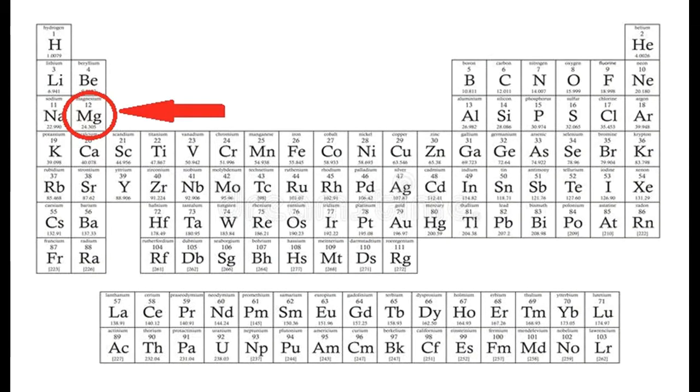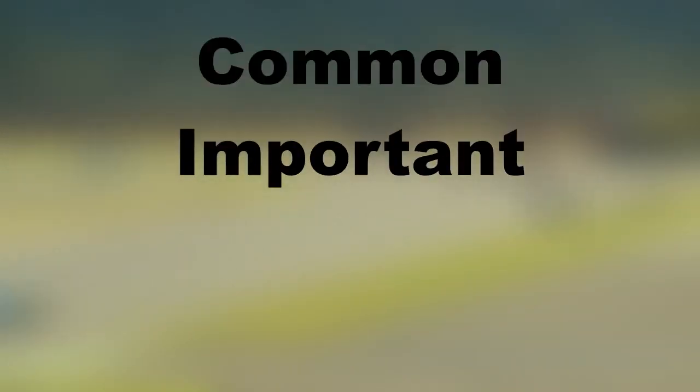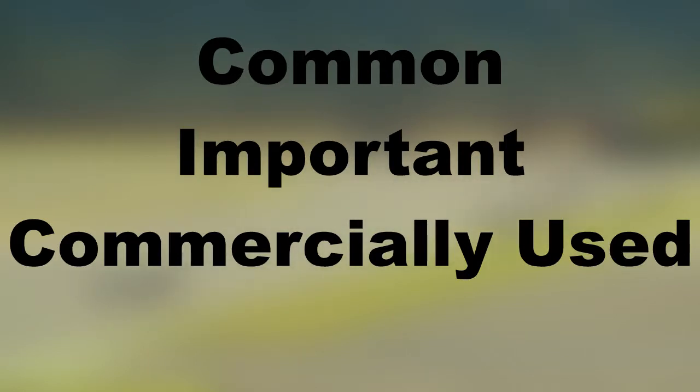Magnesium is the twelfth element on the periodic table with the symbol MG and belongs to the alkaline earth metals group. It is used for a variety of reasons, ranging from medicines to race cars, and is one of the most common, most important, and most commercially used elements in the universe.